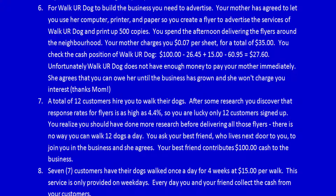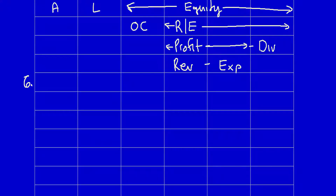We're going to move this page down and write the headings into the top of the chart. What did the business get? The business got the use of the flyers to help generate future revenue. They've been used up and consumed, which is the definition of the element expense. So expenses increase by $35 — recorded as a positive number because it will flow up into the equation and become a negative number. What did the business give away? The business gave an I-owe-you to your mother, which means liabilities increase by $35.